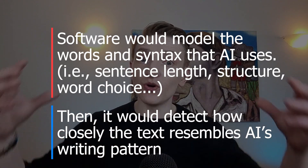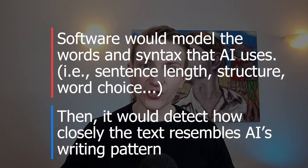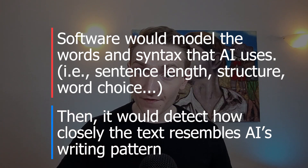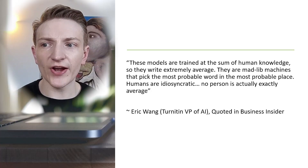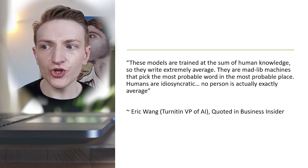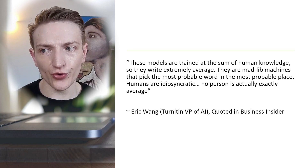The tendency toward having those structures is what Turnitin and these other pieces of software are picking up. That is, if the words and the sentence structure you are using too closely resembles the ChatGPT average, then that would be a signal that the person has cheated. So Eric Wang, the Vice President of AI at Turnitin, explained it as follows: these models are trained on the sum of human knowledge, so they write extremely average. They are mad lib machines that pick the most probable word in the most probable place.